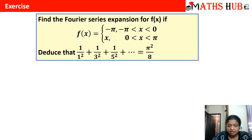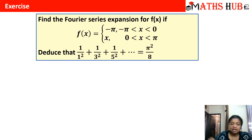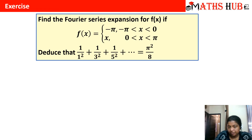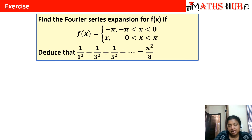The question asks us to find the Fourier series expansion for the given function and then deduce the required expression. Let us first calculate the values of a₀, aₙ, and bₙ, and then we will do the deduction. You can see that the interval is minus π to π, but the function cannot be said to be even or odd, so we have to calculate all the values of a₀, aₙ, and bₙ.